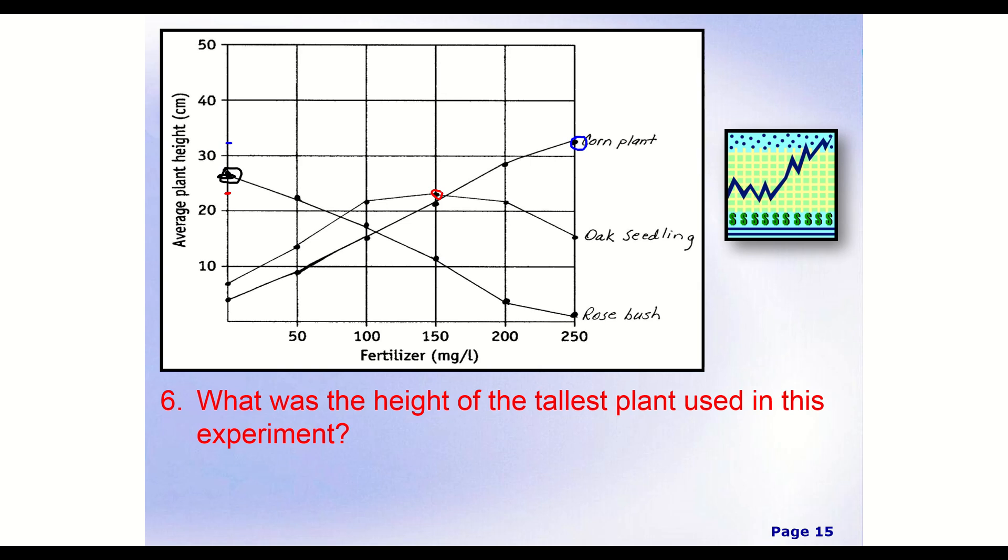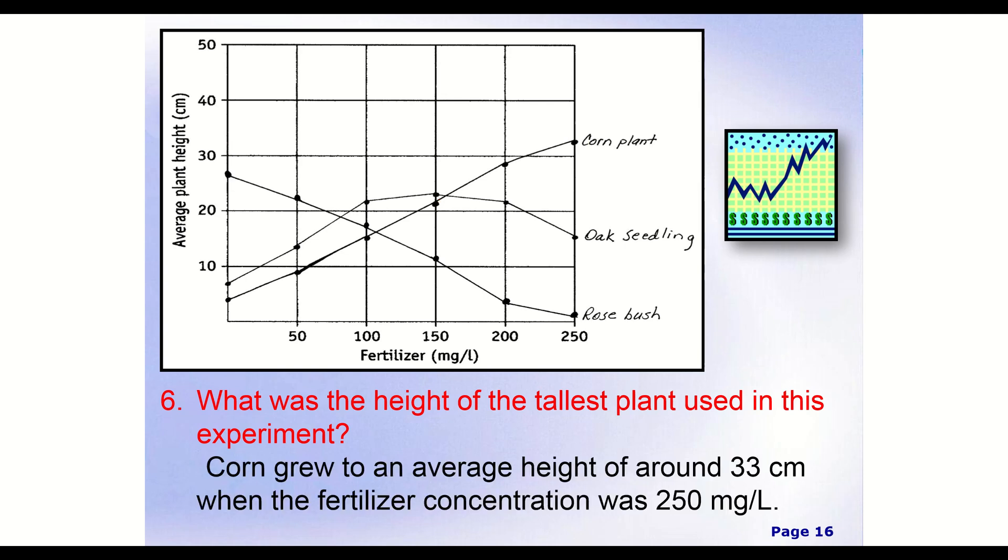And we don't have all these little intervals, so it's hard to tell. I would say it's about 32 or so, maybe 33 centimeters for our overall height. And so a possible answer that we could have is corn grew to an average height of around 33 centimeters. Again, it could be 32. It's somewhere around that height. And we could add that piece of when fertilizer concentration was 250 milligrams per liter. So we don't have to put that, but it adds a little extra detail. If you just want to have that first part, that's also totally fine.